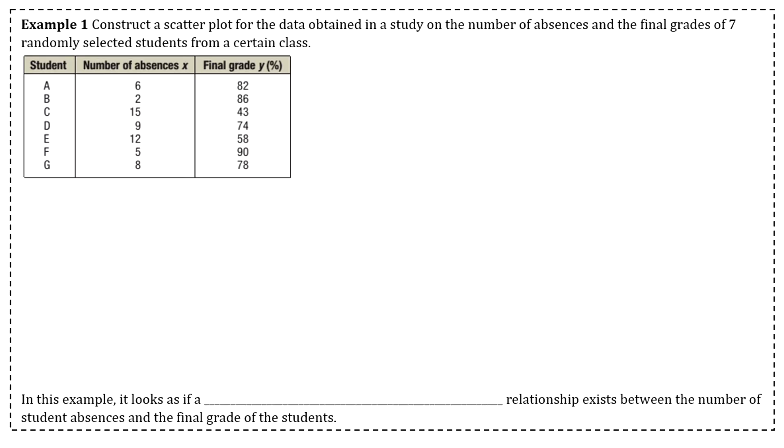Example one: We want to construct a scatter plot for data obtained in a study on the number of absences and the final grades of seven randomly selected students from a certain class. We're given all our data—the seven students, the number of times they were absent, and their final grade.